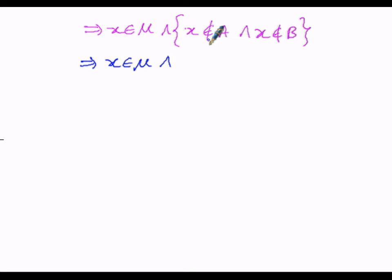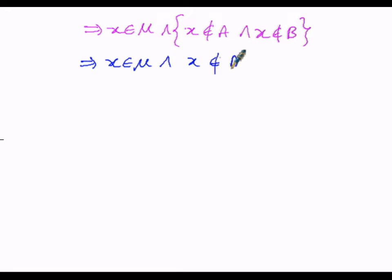In the next logical step, x belongs to μ, and x does not belong to A and x does not belong to B. Since it is 'does not belong to,' as per the definition, if it were 'belongs to' we would use intersection, but since it is 'does not belong to,' the intersection becomes union. So x does not belong to A union B.